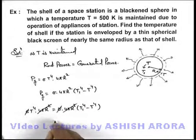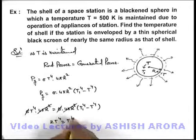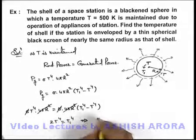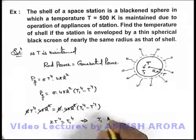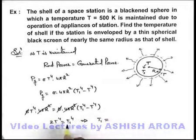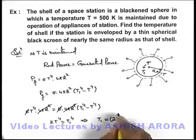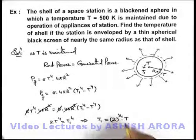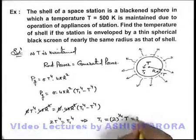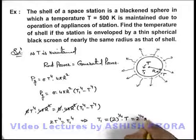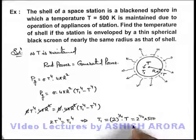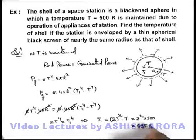On analyzing, we get two T to the power four equals T₁ to the power four. This implies the new temperature of the space station can be given by taking the fourth root of this expression, which is two to the power one-by-four multiplied by 500 Kelvin. So on analyzing, this will be 595 Kelvin — that'll be the answer to our problem.